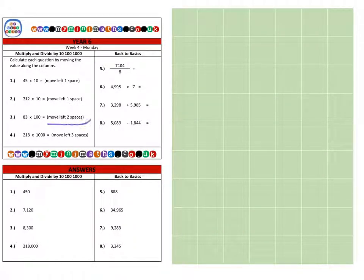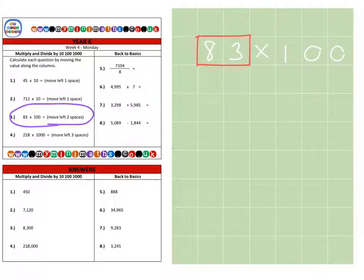Next we're on to question three, which is 83 multiplied by 100. If we take our original number here, and write it out, we'll have our units and tens. And then, because we are multiplying by 100, that's the same as saying times by ten, times by ten. So we're moving two spaces bigger.